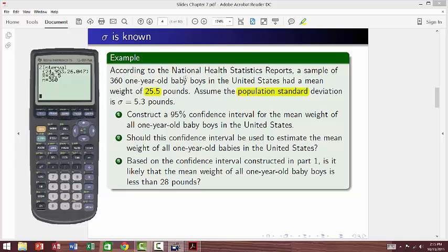And then for Part 3, what does it say here? Based on the confidence interval constructed in Part 1, is it likely that the mean weight of all one-year-old baby boys is less than 28 pounds? And we'll look at the confidence interval that it's given to us that we constructed. And we say yes. It is very likely that the average weight of these boys is less than 28 pounds because the entire confidence interval values, they're all less than 28. So that's how you would use your calculator to construct a z interval and answer the questions and interpret the interval itself.